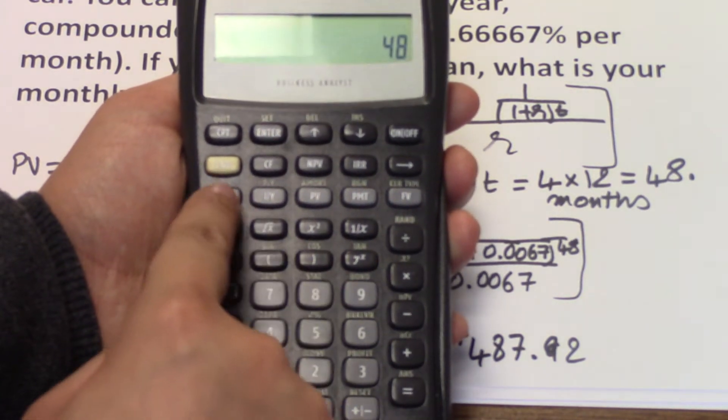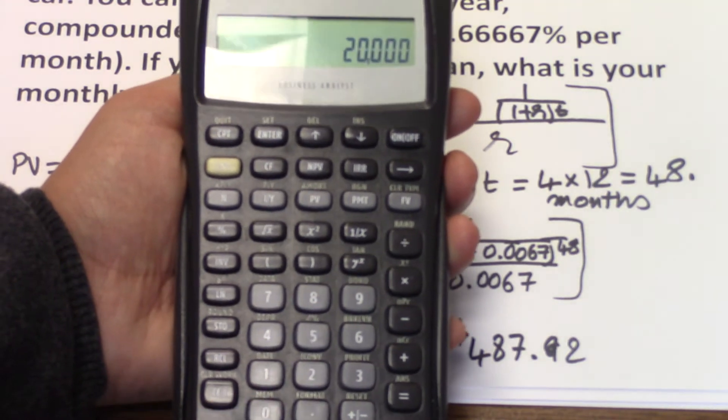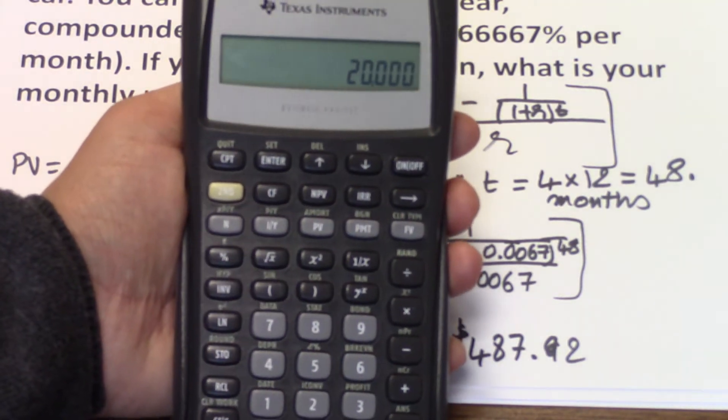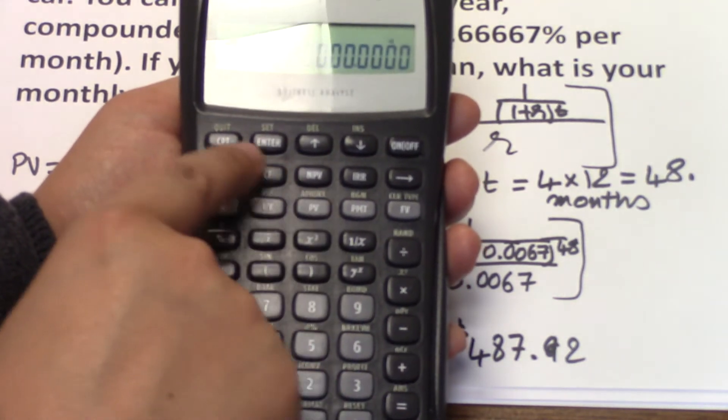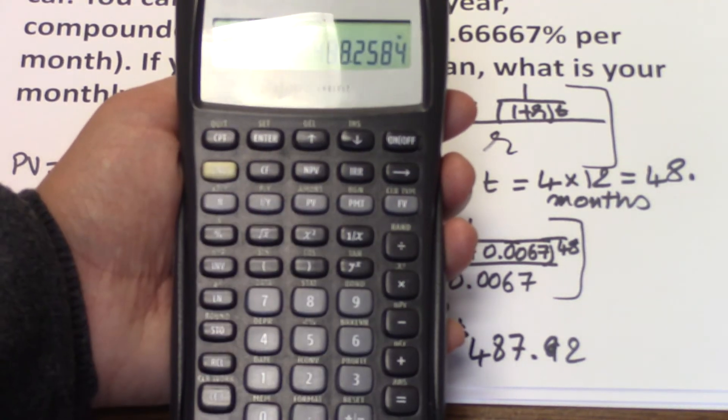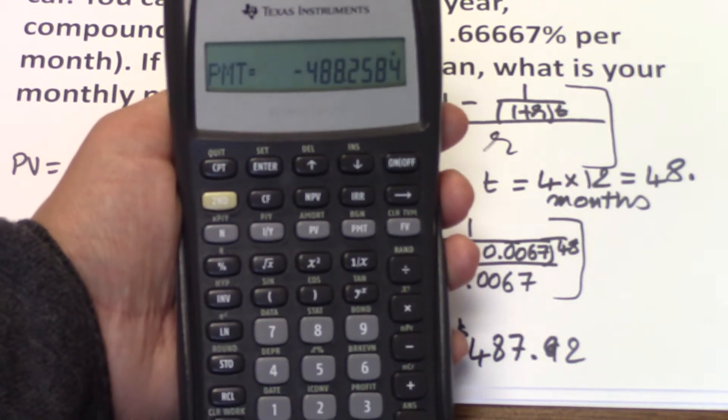Next take 48 months. So 48 is N. $20,000 is your cash inflow from the bank, so we keep it as a positive number and input it as PV. Compute for PMT. You'll find that the payment is 488.25.